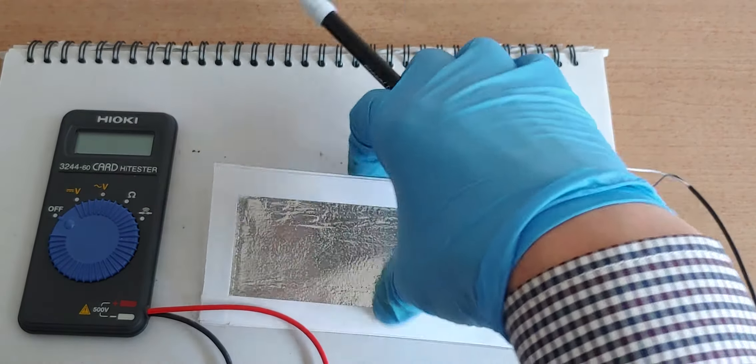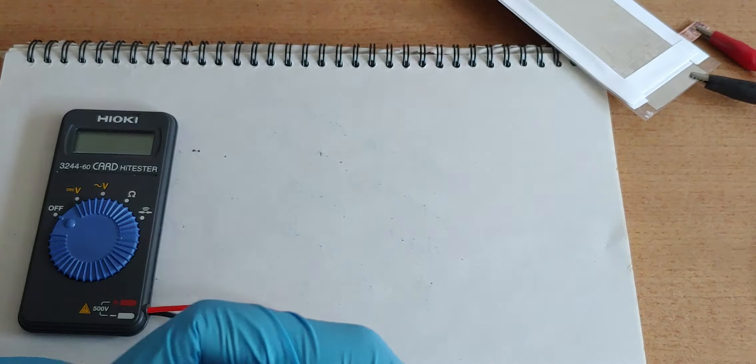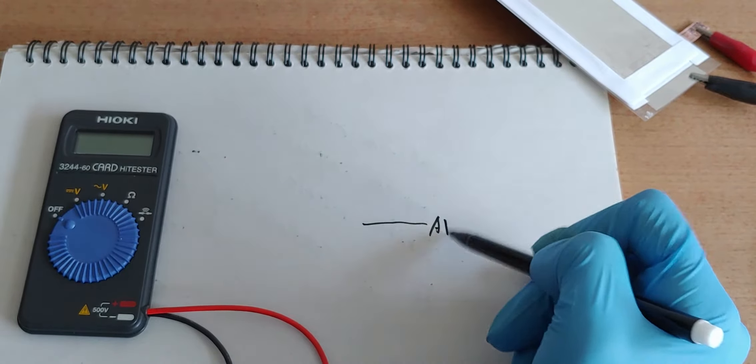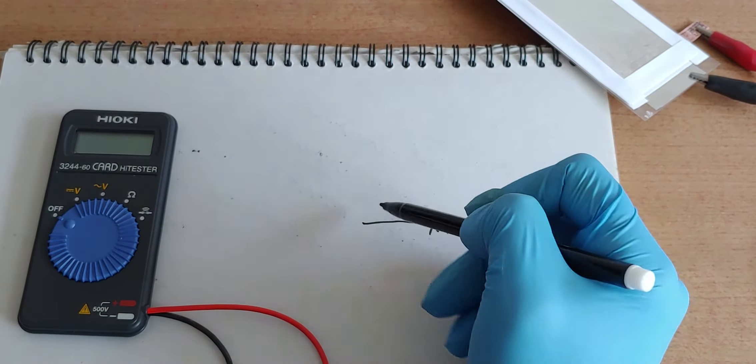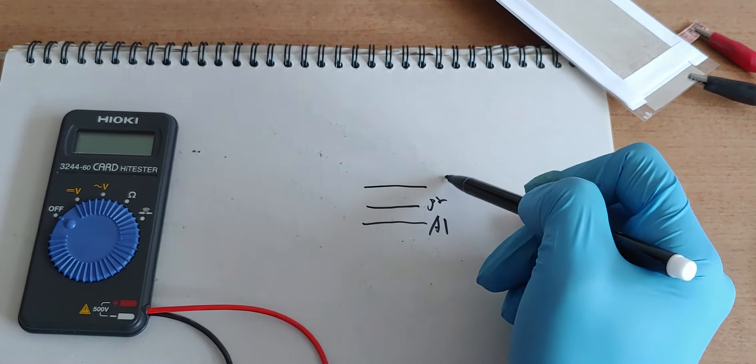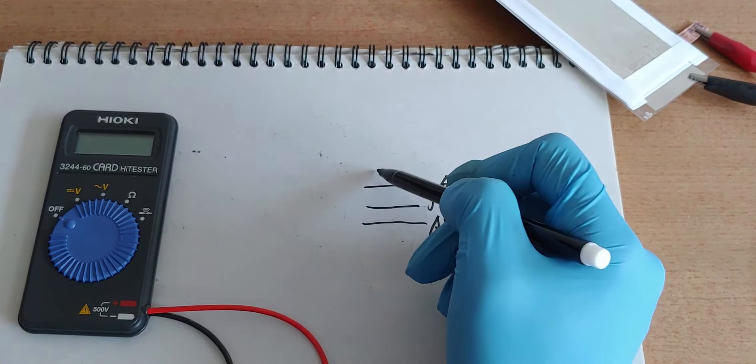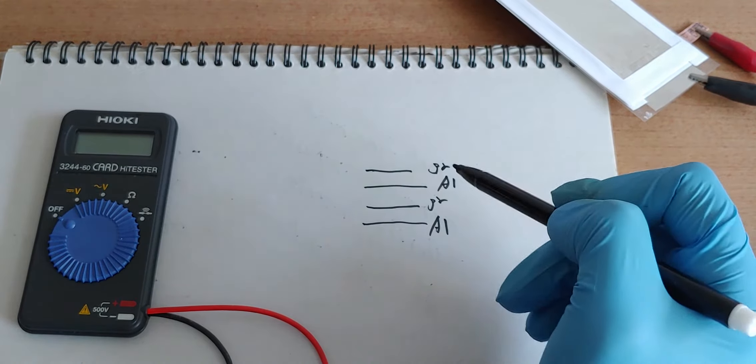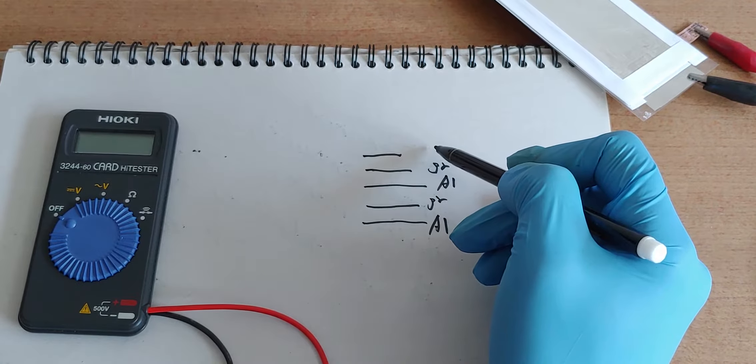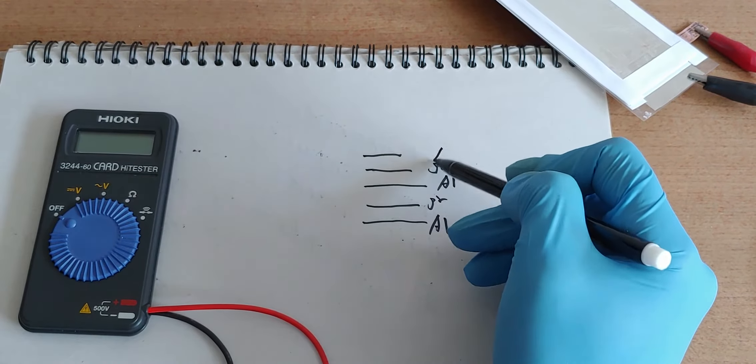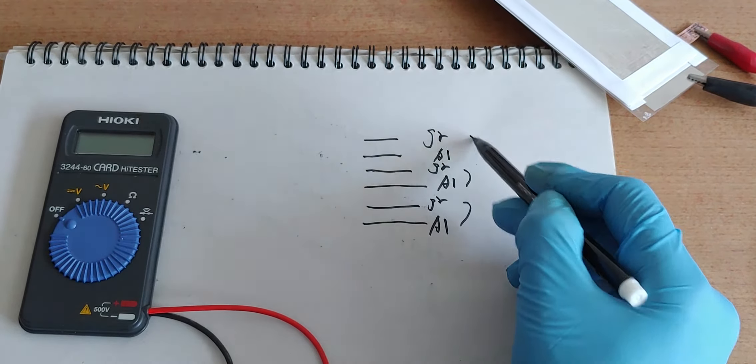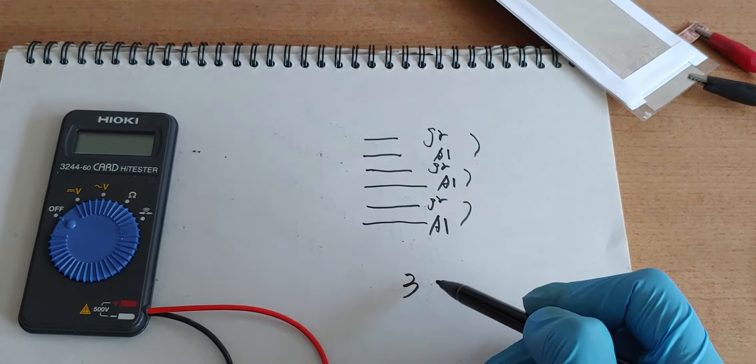Hello everyone. This is the battery. Aluminum, graphene, aluminum, graphene, and then aluminum. Graphene - one, two, three. Three layers.